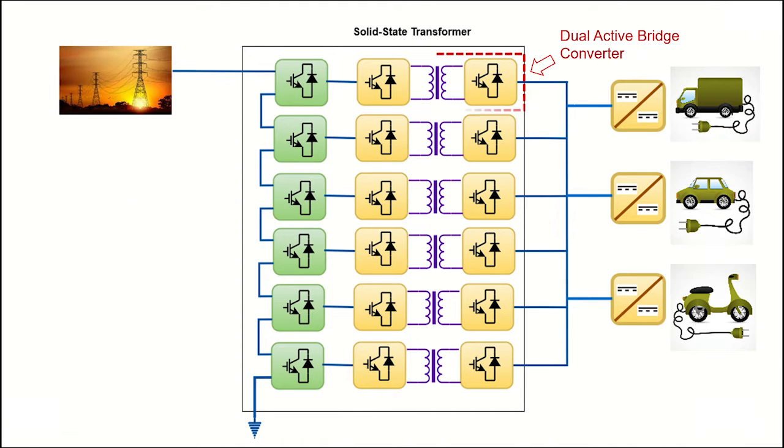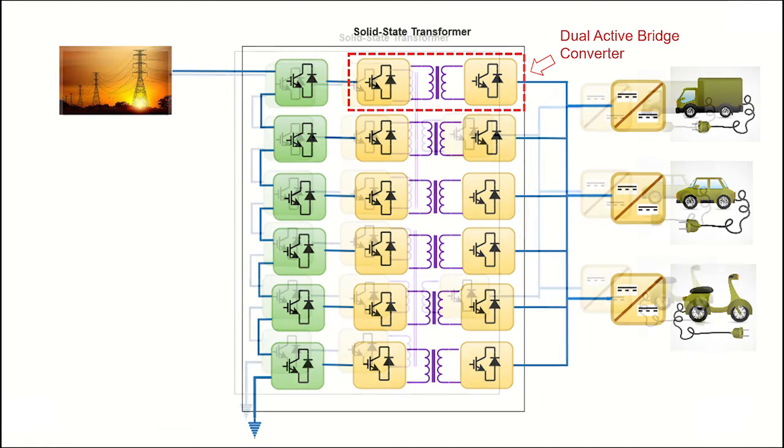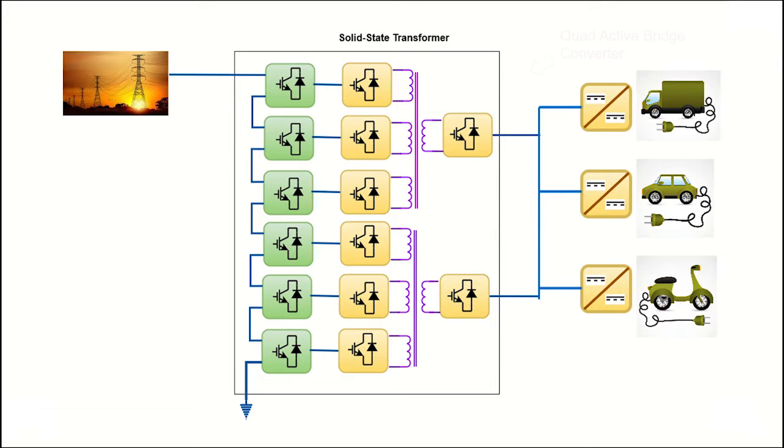Then, the dual-active bridges are connected to each sub-module of cascaded H-bridge. Here, several high-frequency transformers are used. I am proposing to use a quad-active bridge instead of several DABs so that the size and the number of converters can be further reduced.